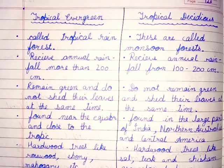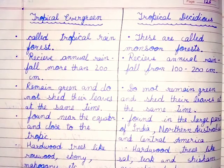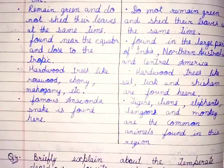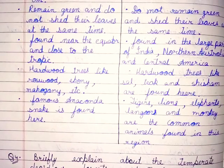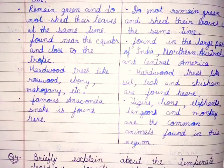Tropical deciduous forests are called monsoon forests. They receive annual rainfall from 100 to 200 cm. They do not remain green and shed their leaves at the same time. Found in large parts of India, northern Australia, and central America. Hardwood trees like sal, teak, and shisham are found here. Tigers, lions, elephants, langurs, and monkeys are the common animals found in this region.